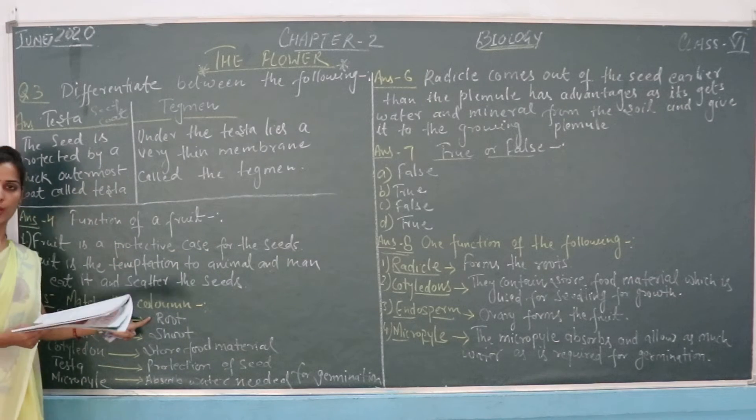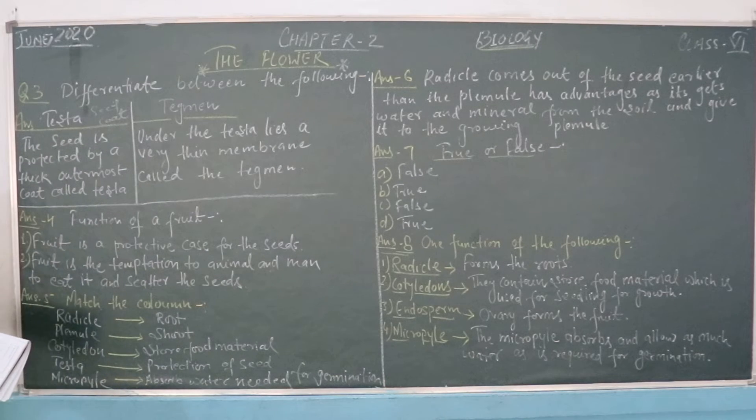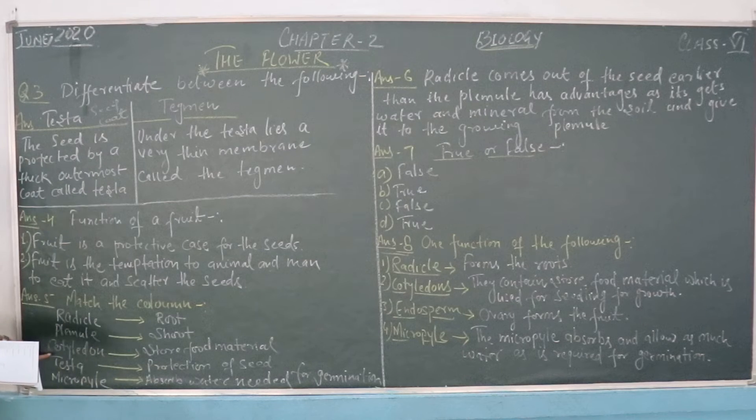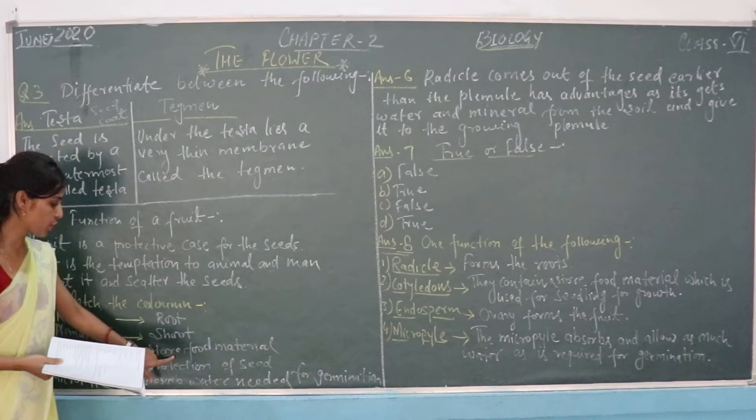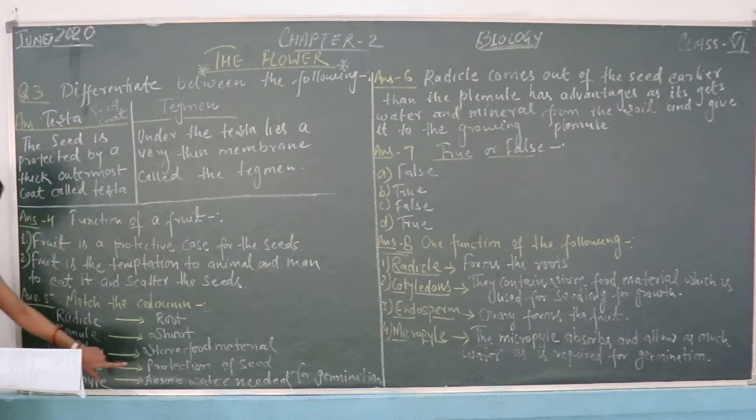Radical emerges from the seed. Next, plumule shoots. Next, cotyledon is stored food. Testa protects the seed.